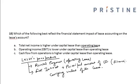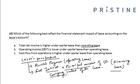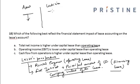Under financing lease, the carrying value of the lease gets reported on both the asset side and the liability side of the balance sheet. On the asset side it goes down by depreciation, whereas on the liability side it goes down by paying interest and repaying the principal amount.